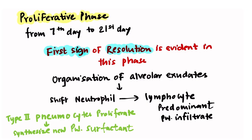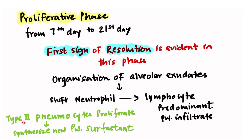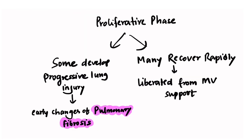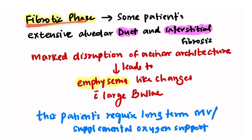The proliferative phase lasts from day 7 to day 21. The first signs of resolution are evident in this phase. Once alveolar exudate gets organized, there is a shift from neutrophil-predominant to lymphocyte-predominant pulmonary infiltrates, and type 2 pneumocytes proliferate and synthesize new pulmonary surfactant. Many patients in this phase recover rapidly and are liberated from mechanical ventilatory support, while some may develop progressive lung injury and early changes of pulmonary fibrosis.